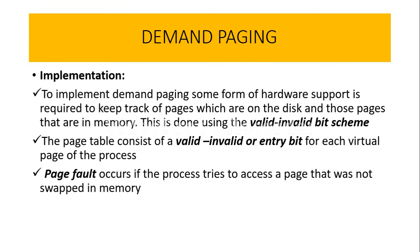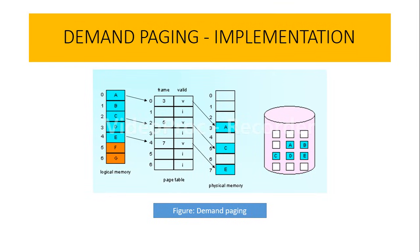There is also the concept of a page fault. Page faults occur when a process tries to access a page which has not been swapped into the main memory. The diagram here shows the implementation of demand paging, with logical memory, physical memory, and a page table using the valid-invalid bit scheme.